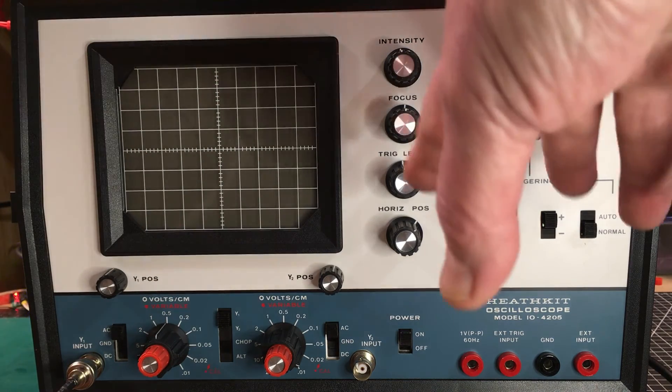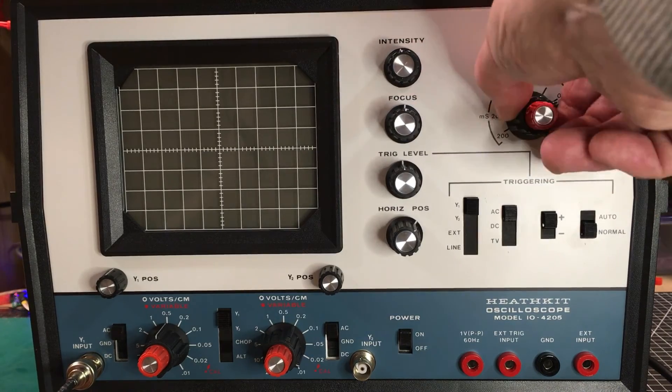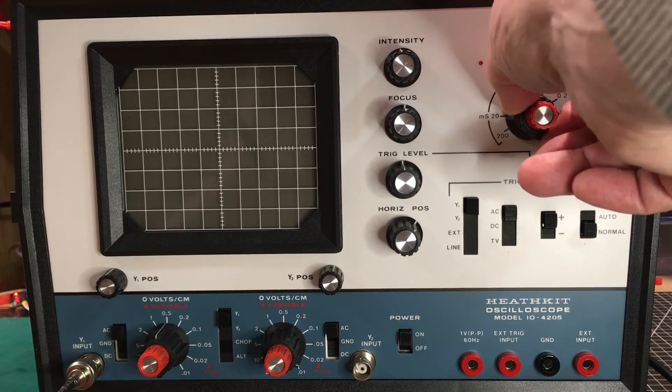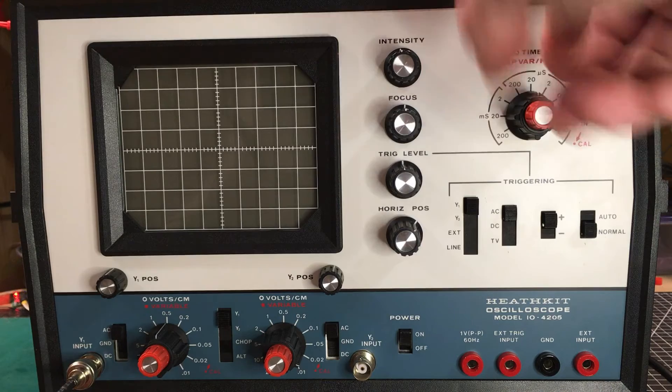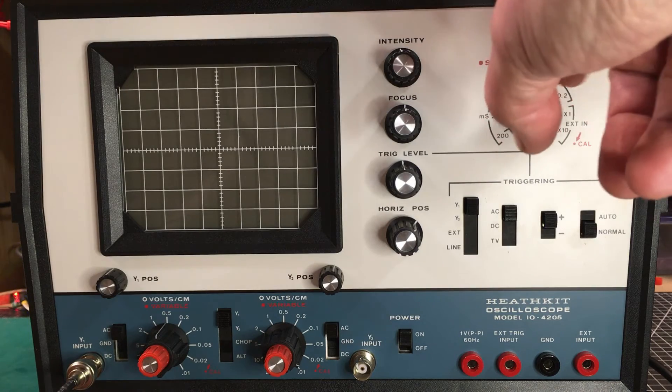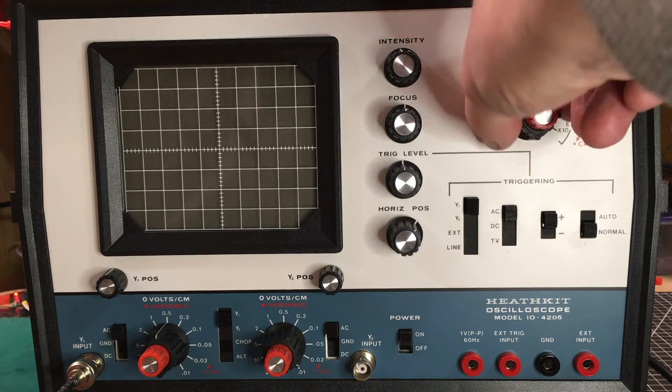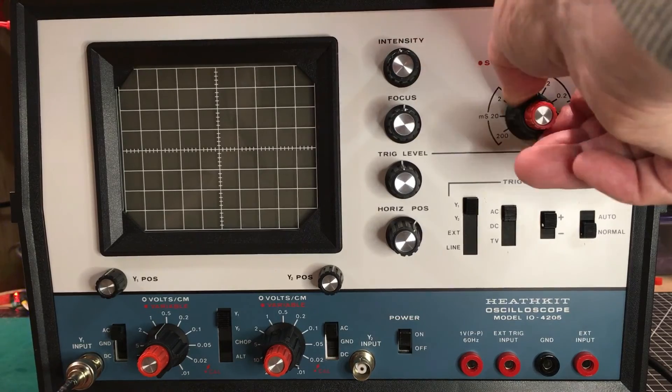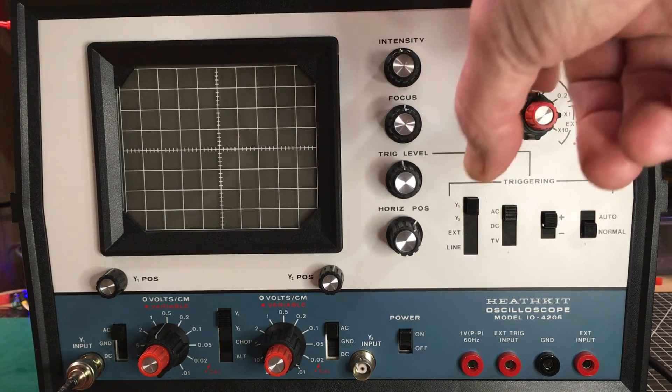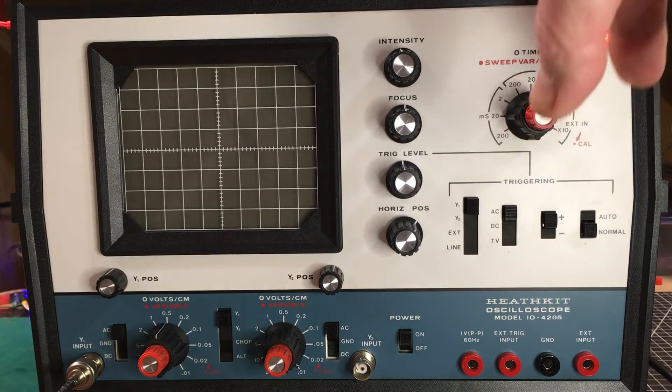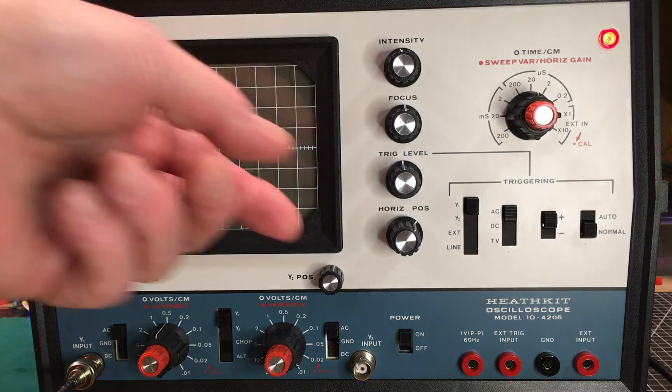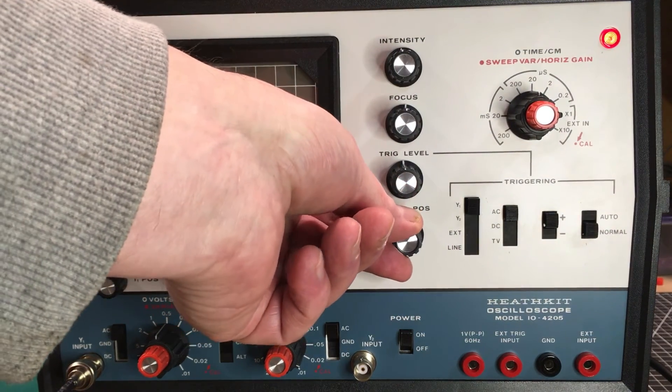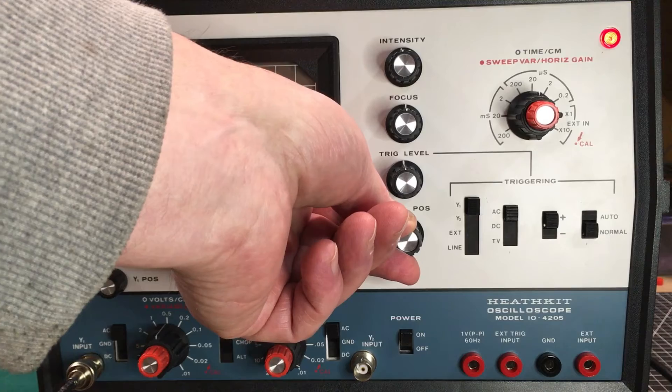Here's the time base over here. This controls your sweep rate. This is in microseconds per centimeter or time per centimeter. It could be in microseconds, milliseconds, and so forth. We'll set it up at 20 microseconds just to begin with. And you have your horizontal position here, horizontal position control. So we'll put that in the middle too.